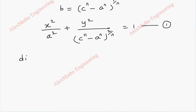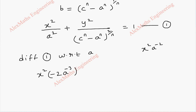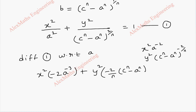I am going to differentiate this first equation with respect to a. Now x squared is a constant — if taken to the numerator it is x squared into a power minus 2. Then differentiating: minus 2, a power minus 3. Similarly y squared is a constant. When it is in the numerator as y squared into (c power n minus a power n) power minus 2 by n, differentiating gives minus 2 by n into (c power n minus a power n) whole power minus 2 by n minus 1, and by chain rule this differentiation gives minus n a power n minus 1. This is a product, and the other side the differentiation is 0.